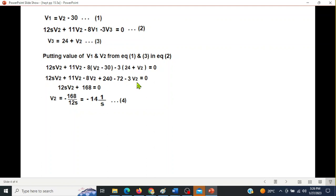And then simplifying, simplifying, simplifying, V2 is minus 14.1 over S. And now we will put this value of V2 to get V1 and V3.